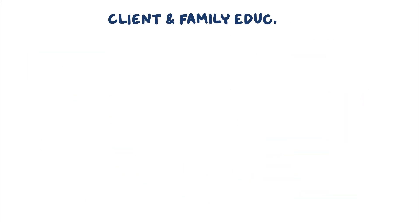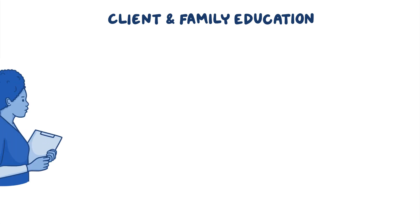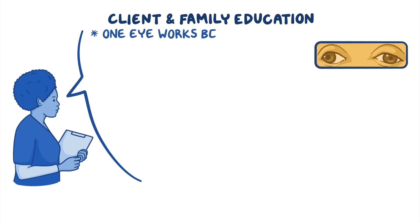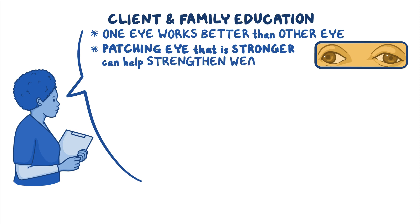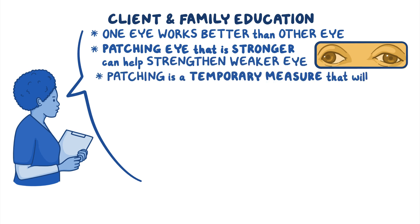Now let's talk about client and family education. First, explain how one eye works better than the other and that patching the stronger eye can help strengthen the weaker eye. Reassure the child's caregivers that patching is a temporary measure that will help prevent loss of vision.